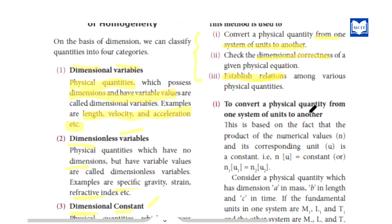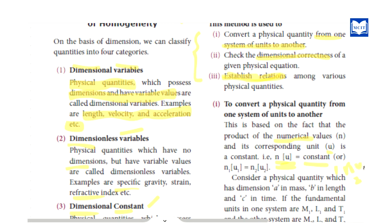So in this method, we will see how to convert a physical quantity from one system of units to another. We consider the numerical value and the units. The key principle is that n1u1 is equal to n2u2 — the product of numerical value and unit remains constant across systems.